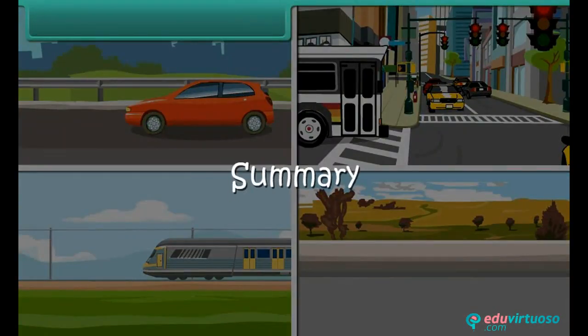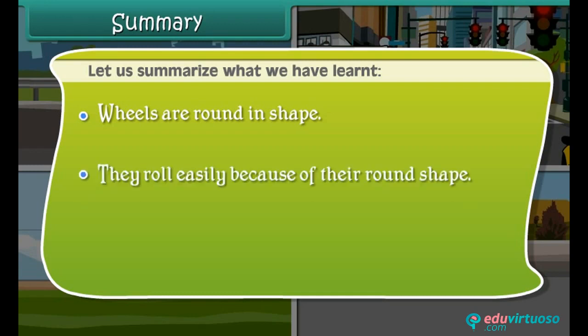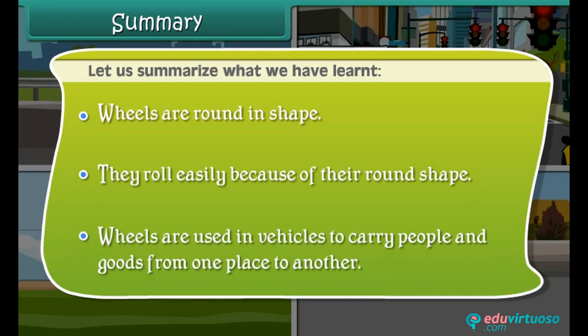Let us summarize what we have learned. Wheels are round in shape and they roll easily because of their round shape. Wheels are used in vehicles to carry people and goods from one place to another.